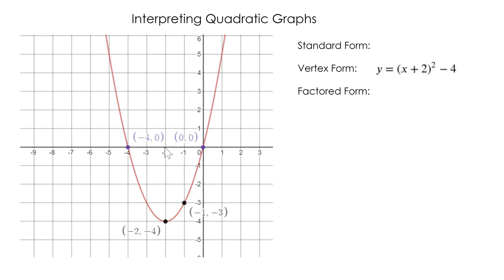I have x plus 2 because it's minus h, so minus negative 2 is positive 2. x plus 2, the quantity squared, minus 4 because we're adding our k value. From here, since I know my a value is 1, my factored form is easy. These are my factors, so my factored form is just x times the quantity x plus 4.